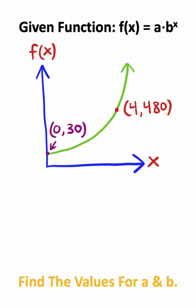You can solve this problem. We have a function in the form a times b to the x power. We are given a graph of this function and two points on the graph. We need to calculate the values for a and for b.